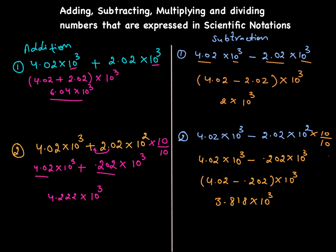So that's how we add, subtract, multiply, and divide numbers in scientific notation. Quick recap: if the powers are the same, just add or subtract the numbers and keep the power. If the powers are different, adjust by multiplying and dividing by the appropriate power of ten and shift the decimal accordingly. I hope you liked the video — share it with your friends, subscribe, and have a good day!